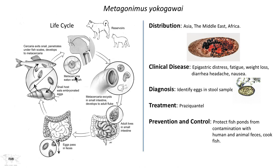There are fewer clinical signs and symptoms associated with Metagonimus than with the other closely related species. Some general features include epigastric distress, fatigue, weight loss, diarrhea, headache, and nausea — very nondescript symptoms. You would never know what's wrong until you've identified the egg in the stool. Once that egg is found, even if it's misdiagnosed as Clonorchis or Heterophyes, the treatment is the same: praziquantel.